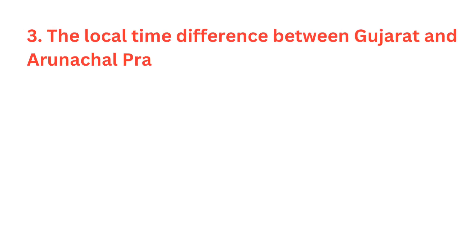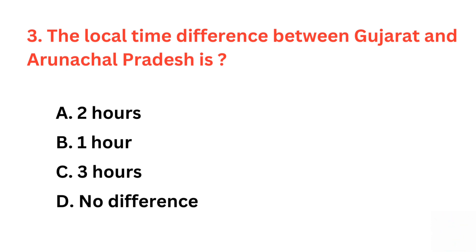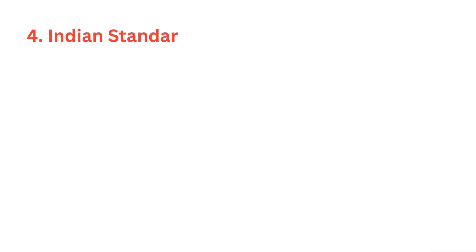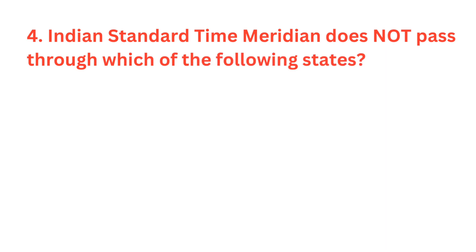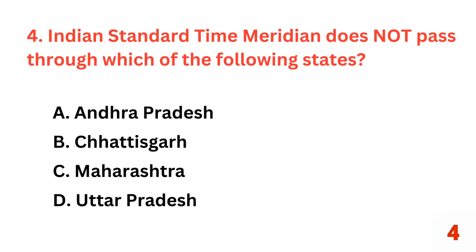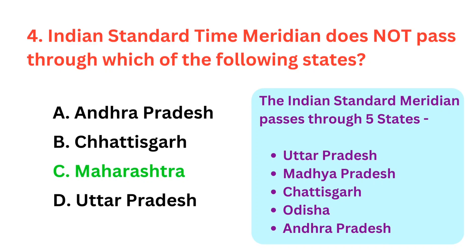The local time difference between Gujarat and Arunachal Pradesh is? The correct answer is option A, 2 hours. Indian standard time meridian does not pass through which of the following states? The correct answer is option C, Maharashtra.